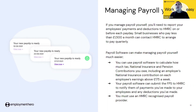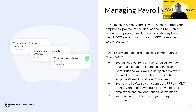If you manage payroll yourself, you need to report your employees' payments and deductions to HMRC on or before the pay date. Small businesses who pay less than £1,500 a month can contact HMRC and arrange to pay quarterly if that benefits your cash flow. Payroll software can make running your payroll a lot easier — it can calculate how much tax, national insurance, and pension contributions you owe, including your employer's national insurance contributions. Your payroll software can submit the FPS and EPS to HMRC. We recommend using an HMRC-recognised payroll system, and the gov.uk website lists all providers recognised by HMRC.